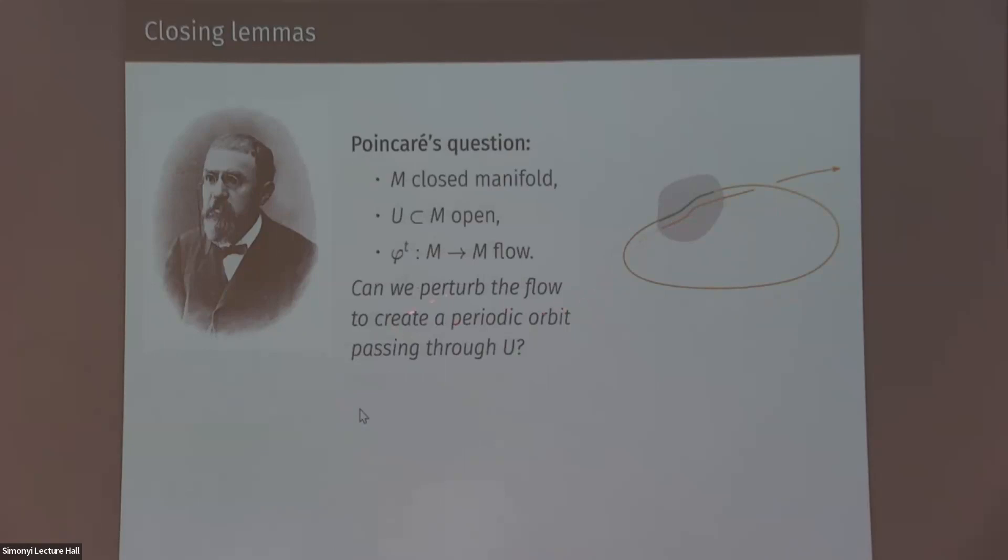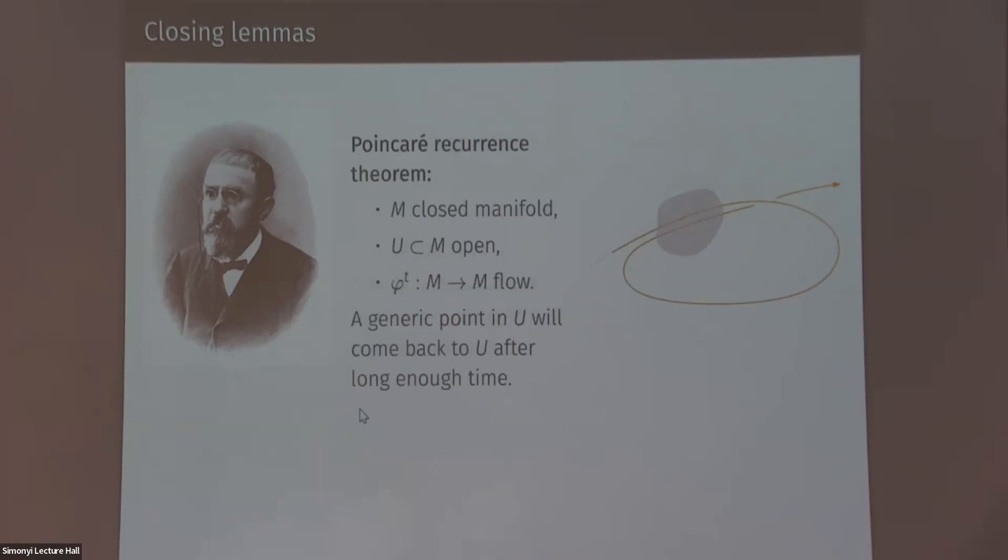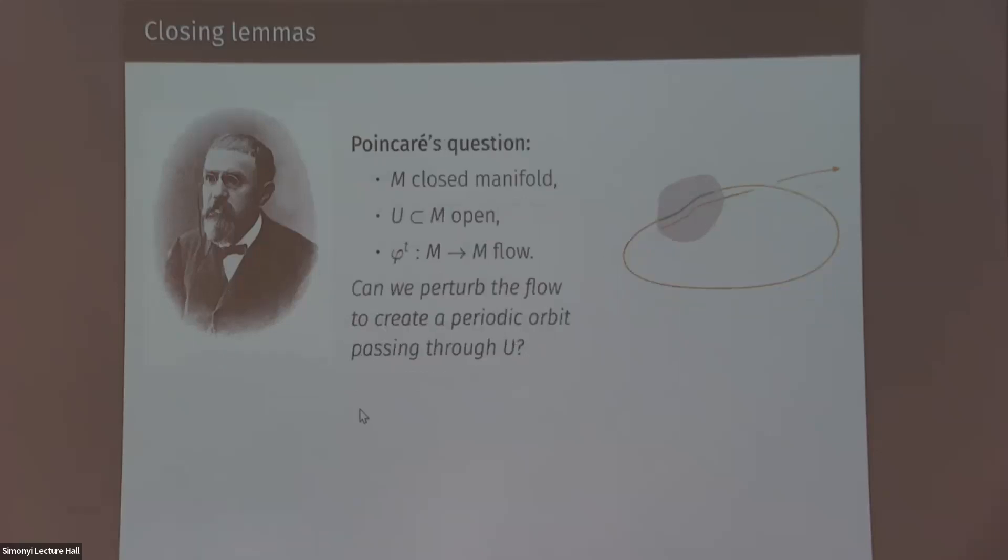Answers to the question depend heavily on what you mean by perturb, what regularity of perturbations you allow. If you just look at the vector field generating the flow and you take some local coordinates here and you just try to force it by hand to close up, what you get is a C0 perturbation of the vector field generating the flow. So this is easy. If you want C1 perturbations, that's already hard and was achieved in a sequence of works from the 60s to the 80s. These works were given the name closing lemmas because you close up almost closed orbits.